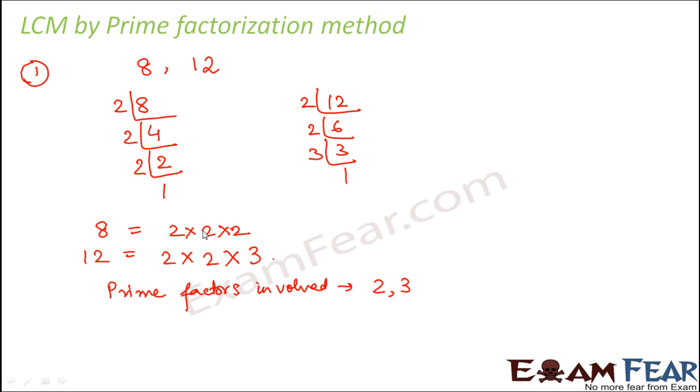So 2 is getting repeated a number of times. Again 3 is getting repeated some number of times. But the prime factors which are involved in the entire scenario is 2 and 3.